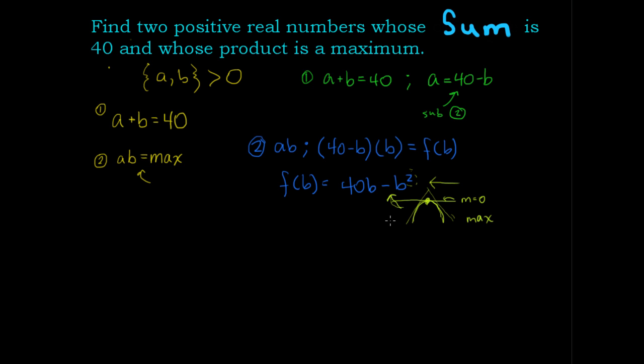In order to find the point in which m equals zero, we want to take the derivative. The derivative is a rate of change - it'll tell us the slope at any point. So we're going to take the derivative of f(b). f prime of b is equal to 40 minus 2b. The derivative of 40b is 40, and the derivative of minus b squared is minus 2b.